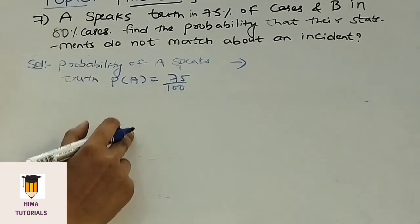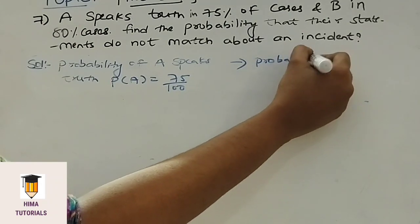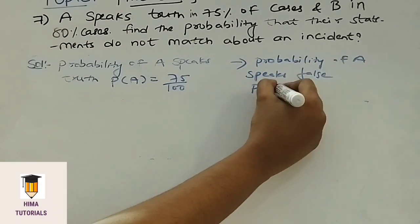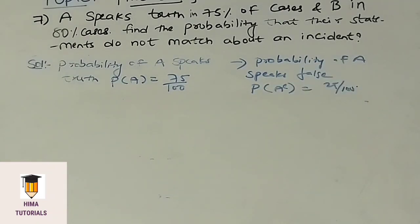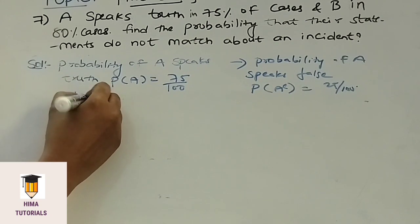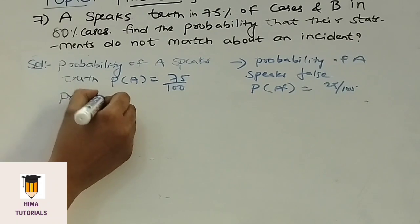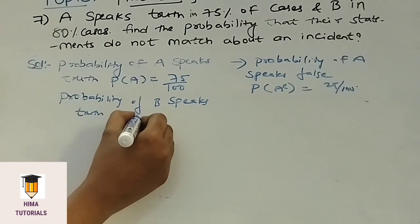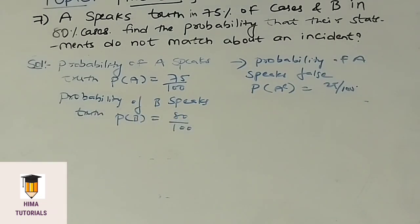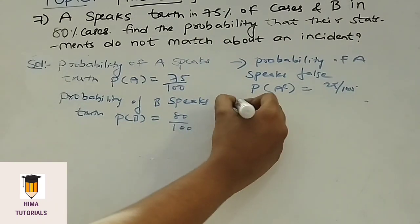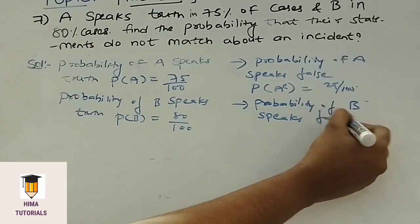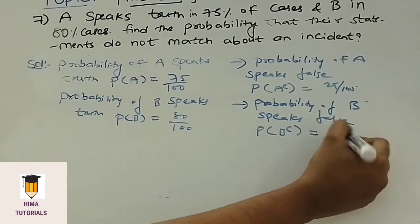If probability of A speaks truth is 75 by 100, then probability of A speaks false, denoted by P of A complement, is 25 by 100. Now coming to B: B speaks truth in 80% cases, so probability of B speaking truth, P of B, is equal to 80 by 100. And probability of B speaking false, P of B complement, is equal to 20 by 100.